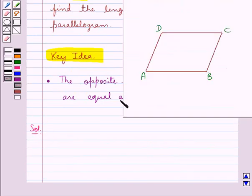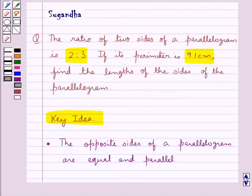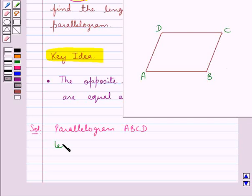Consider this parallelogram ABCD. Now we are given that the ratio of two sides of a parallelogram is 2 is to 3. So we take, let AB be equal to 2x and BC be equal to 3x.